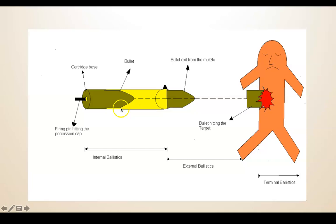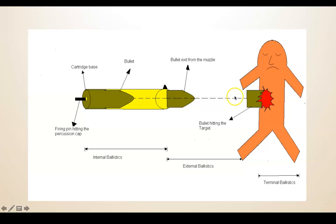Looking at this diagram: the cartridge contains a projectile — the bullet. When we initiate firing, the bullet travels within the barrel — that is internal or interior ballistics. The back end of the barrel is the breech end and the front end is the muzzle end. When the projectile leaves the muzzle and travels to the target — in air, water, or any medium — that is external ballistics. When it hits and travels within the target, that is terminal ballistics.